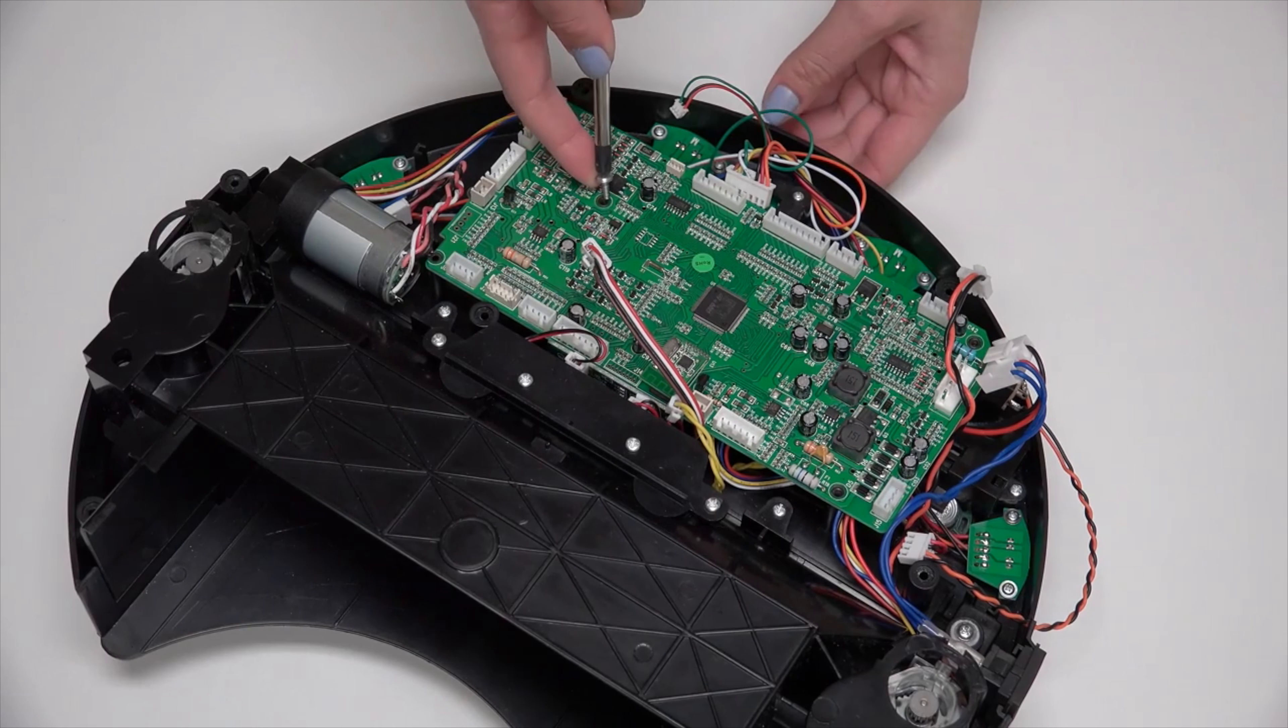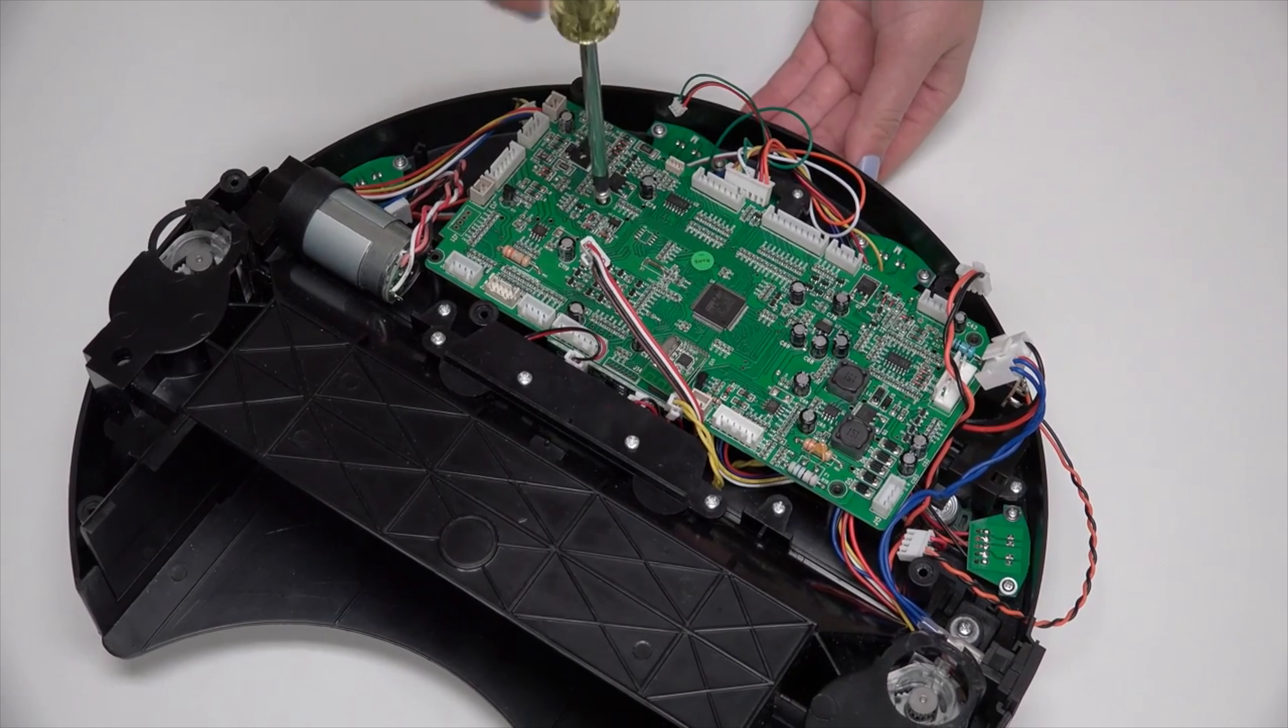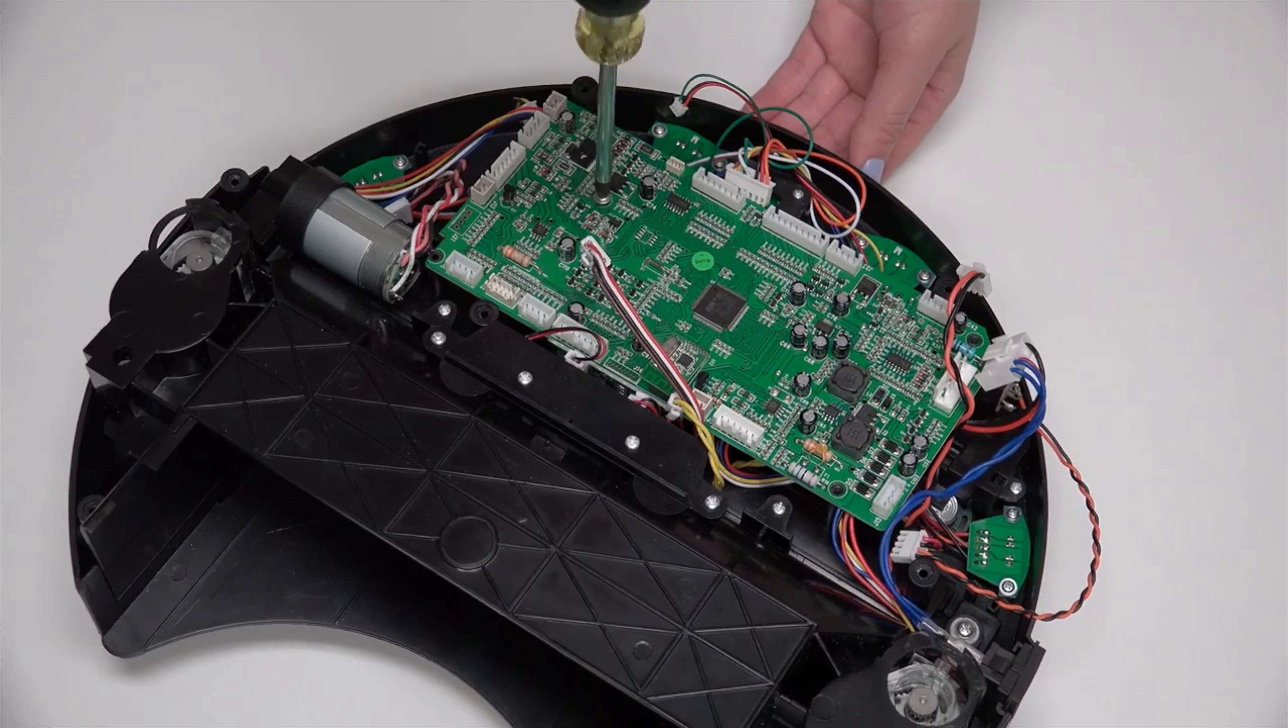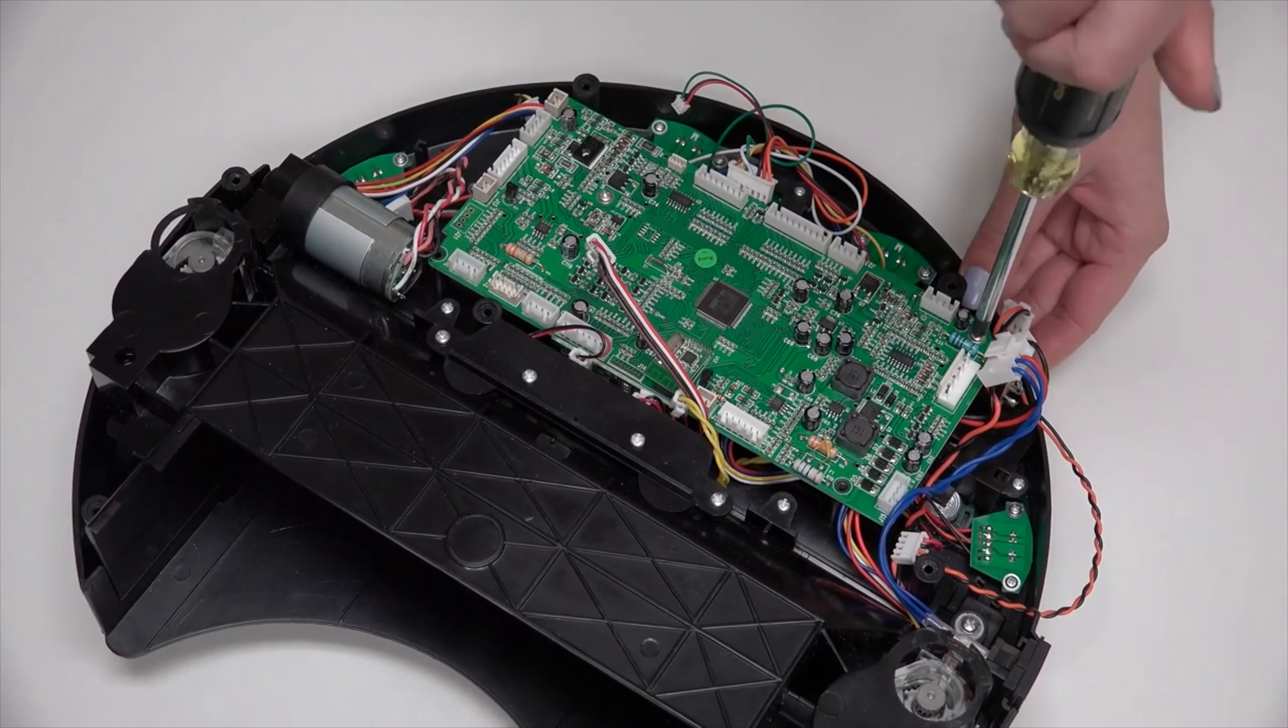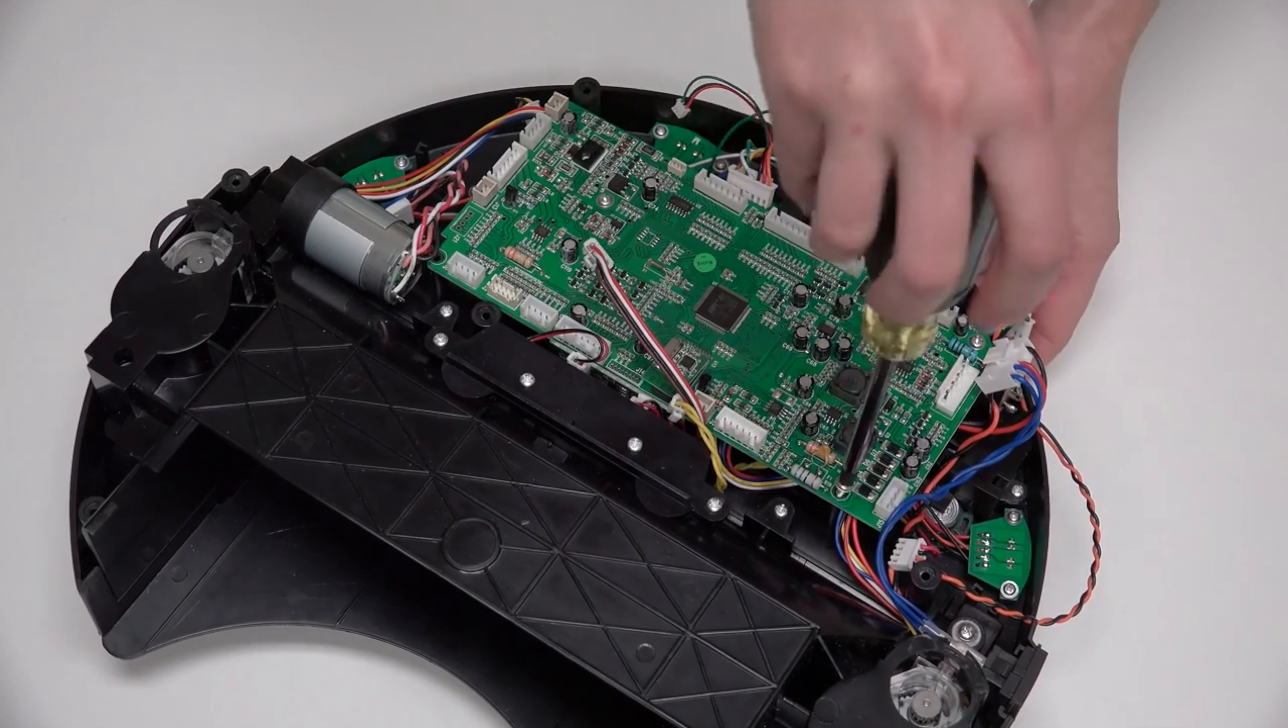One screw goes in the middle of the mainboard, one in the top corner, and one in the lower corner.